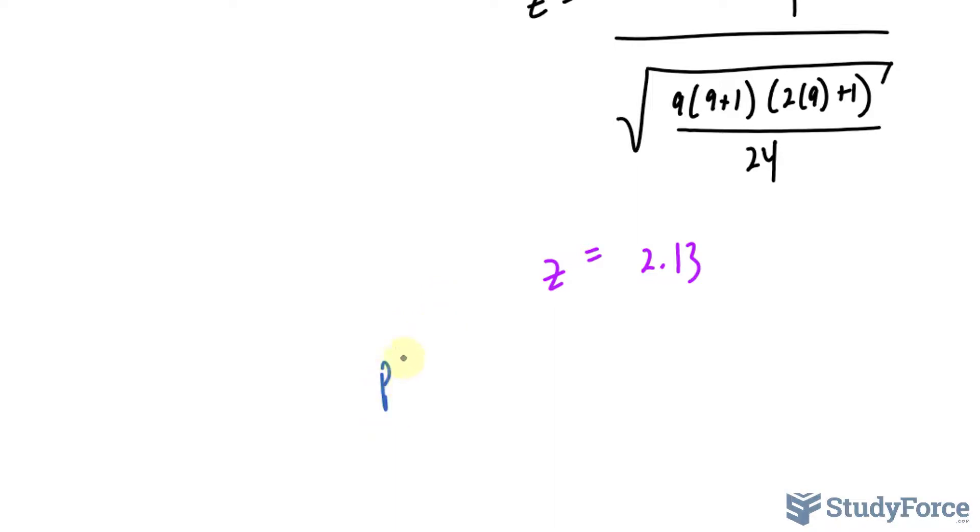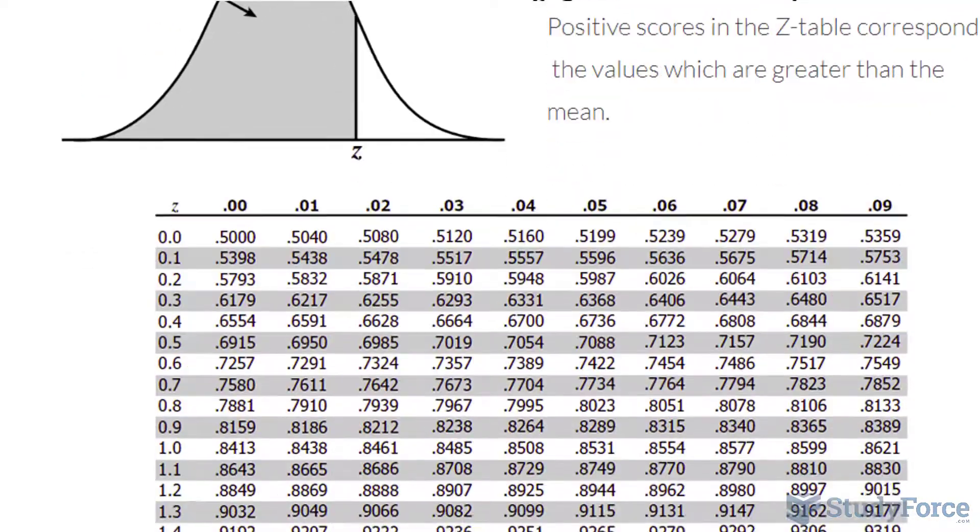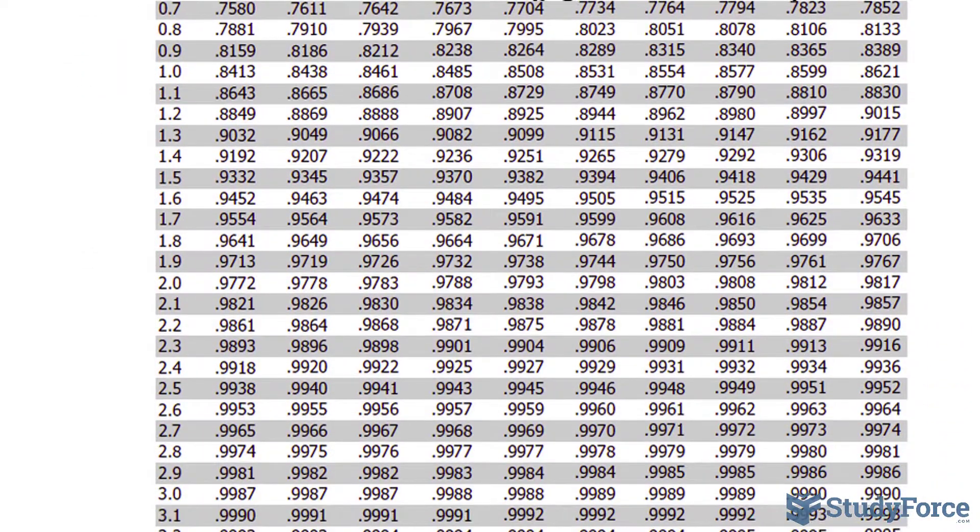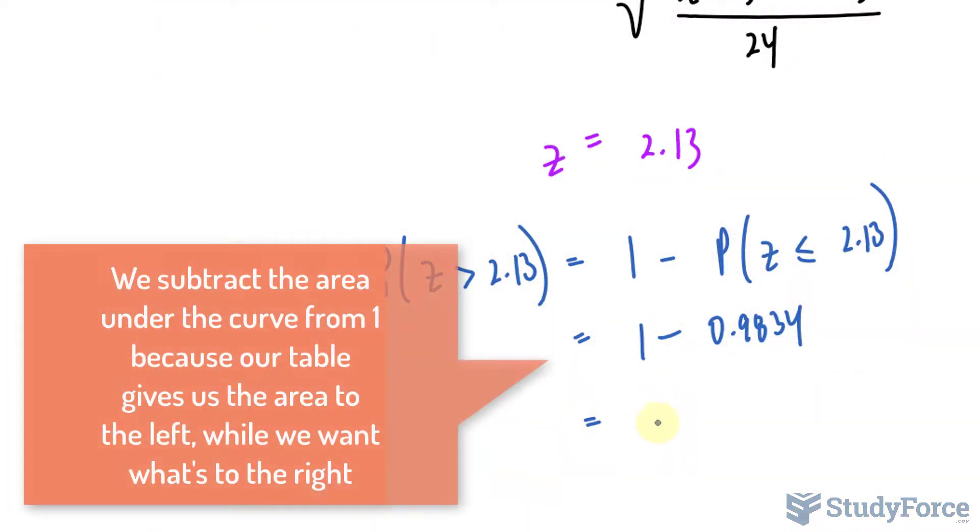Using this value, we need to find the probability of z being greater than 2.1. We'll take 1 minus the probability of z being less than or equal to 2.13. We need to locate this in a table. You should get 0.9834. The difference of these is 0.0166.